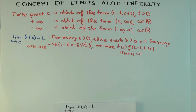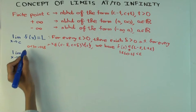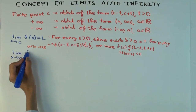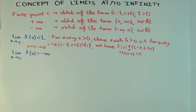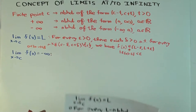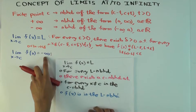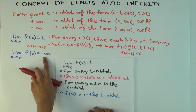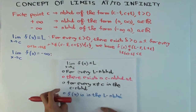Another question one can ask: what is the definition of limit as x approaches c of f(x) equals minus infinity? We want to first specify a neighborhood of L, except now L is not finite — it's minus infinity. So how do you specify a neighborhood of minus infinity?